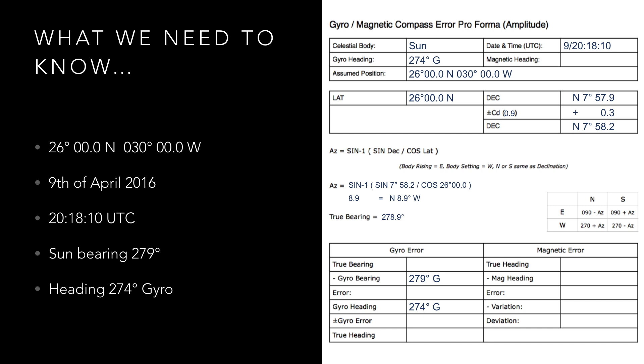And that's it — you've now calculated the bearing of the sun by amplitude. To complete our compass error we simply subtract the gyro bearing from our true bearing, which gives us an error of negative 0.1, which we name high.